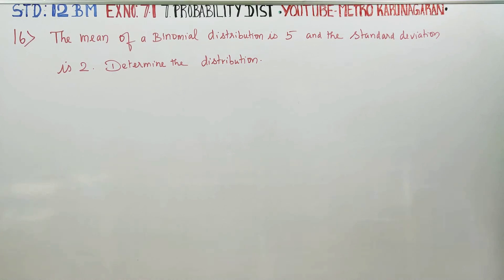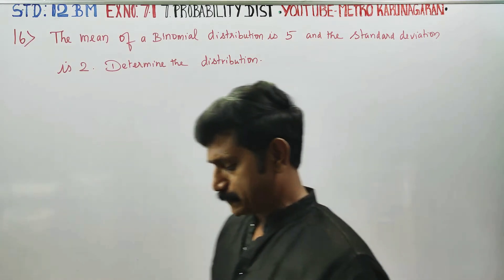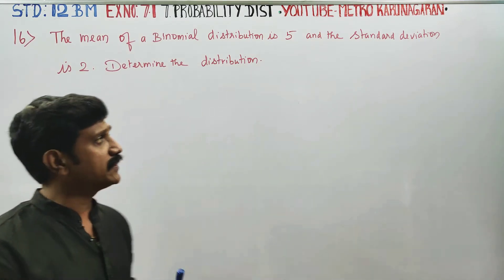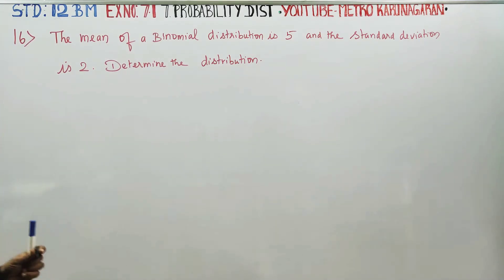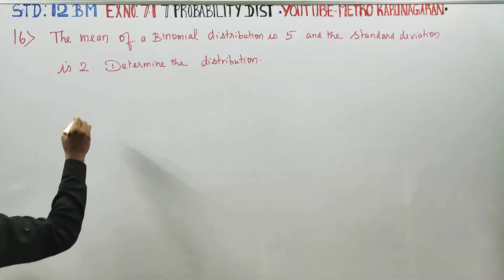Dear 12th standard business mathematics students, I am Atroh Karnagaran. The mean of a binomial distribution is 5 and standard deviation is 2. Determine the distribution.